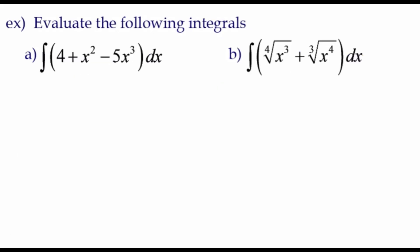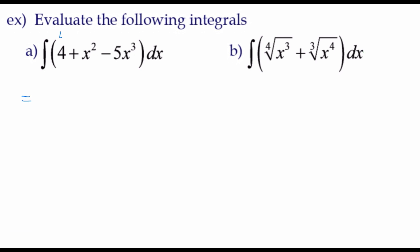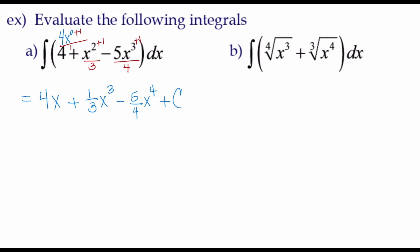Let's take a look at example A: find the antiderivative of 4 plus x squared minus 5x cubed dx. When you have a number by itself, remember it means 4x to the 0 power. Add 1, giving 4x to the 1 power, divide by 1 — so 4x. For x squared, add 1 and divide by the new power 3, writing this as one-third x to the third power. For the 5x cubed term, add 1 to the 3 giving 4, divide by 4 — getting minus five-fourths x to the fourth power plus c, because every time you find the antiderivative you must write plus c.